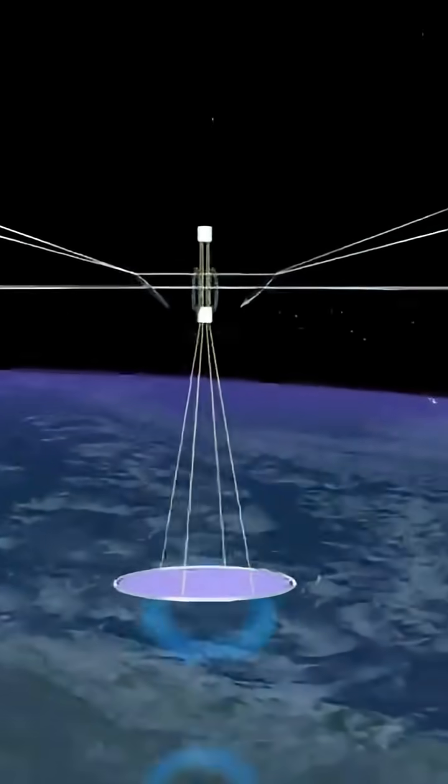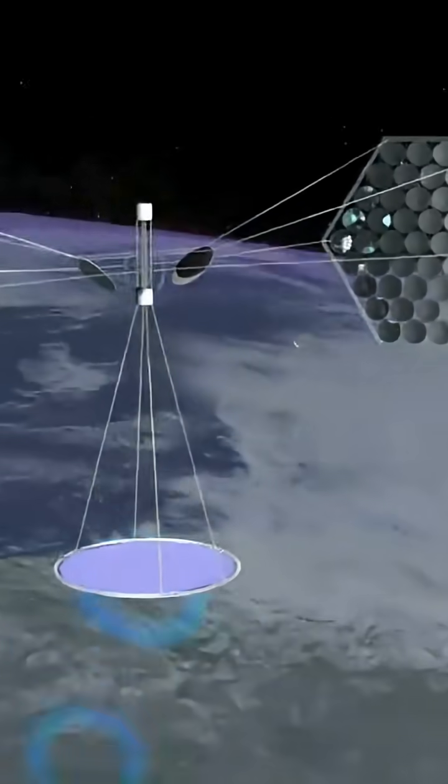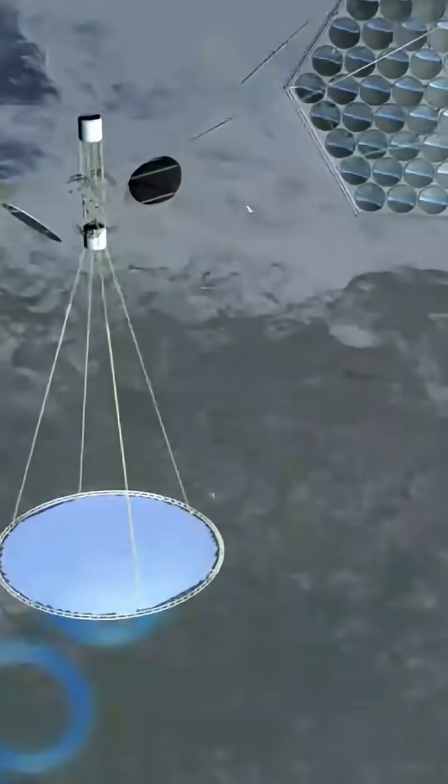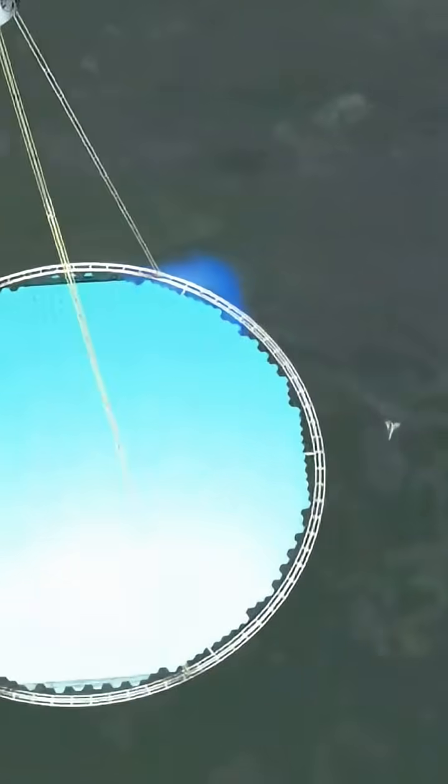China's Chongqing project aims to launch a full-scale solar power plant into orbit by 2035, capable of transmitting gigawatts of clean energy straight to the planet's surface.